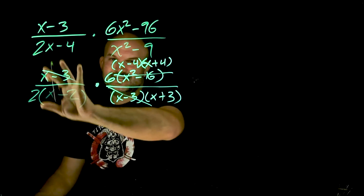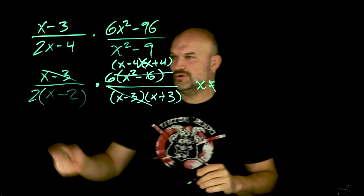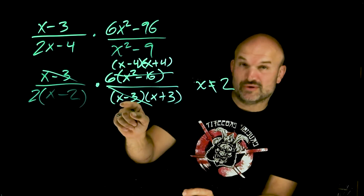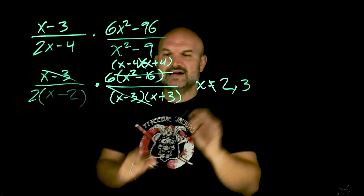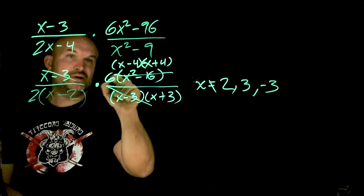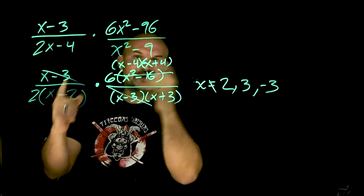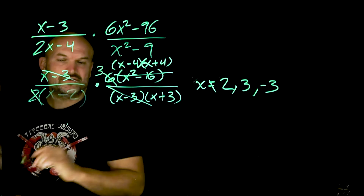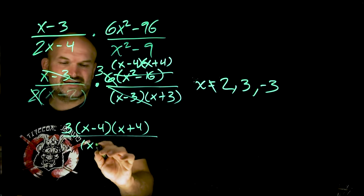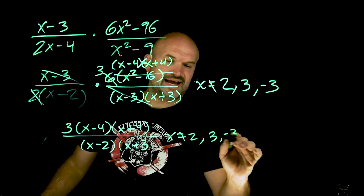I identify the excluded values before dividing out. x cannot equal 2, because 2 minus 2 is 0 — the whole thing is 0. x cannot equal 3, because 3 minus 3 is 0. And x cannot equal negative 3. Now rewriting our simplified expression: the (x minus 3) divides out; 2 divides into 6 three times, giving a 3 in the numerator. So the final answer is 3 times (x minus 4) times (x plus 4) all over (x minus 2) times (x plus 3), with excluded values x ≠ 2, 3, −3.